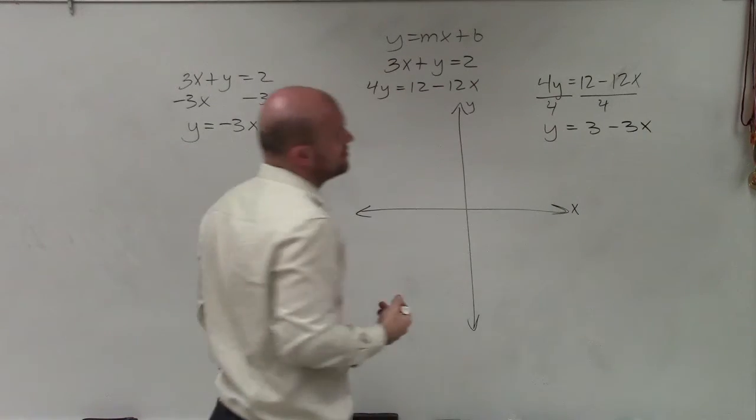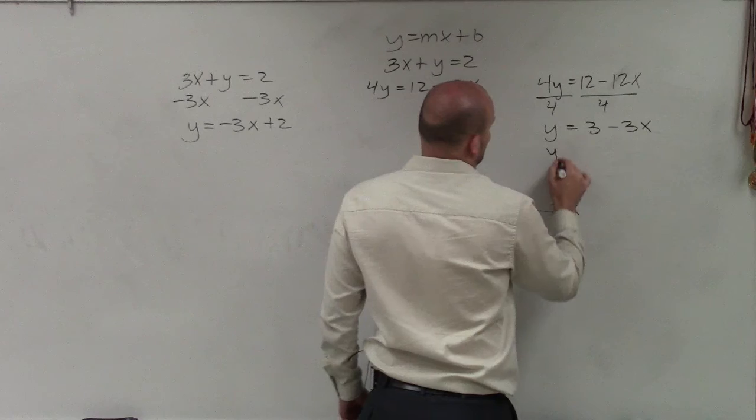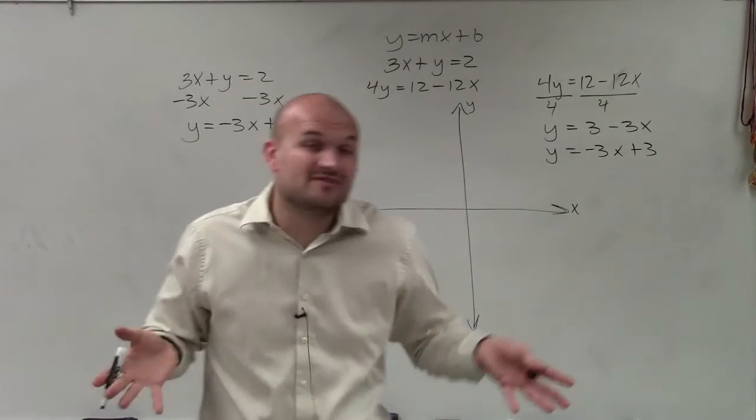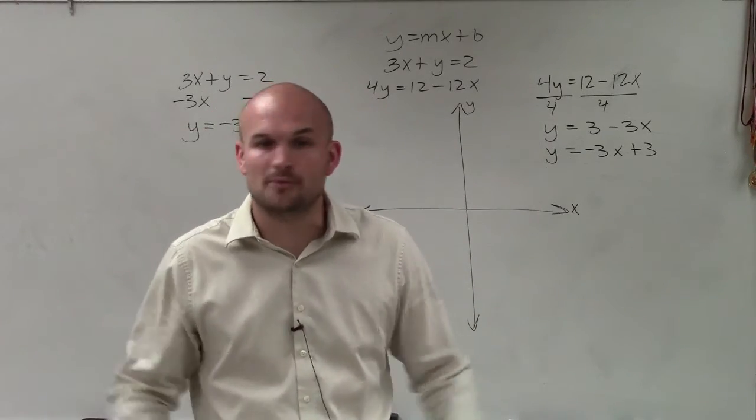Now again, what we like to do is rewrite our variable in front of the constant. So this would be y equals negative 3x plus 3. And automatically I see something that's very important. I see that my two equations in slope-intercept form have the exact same slope.